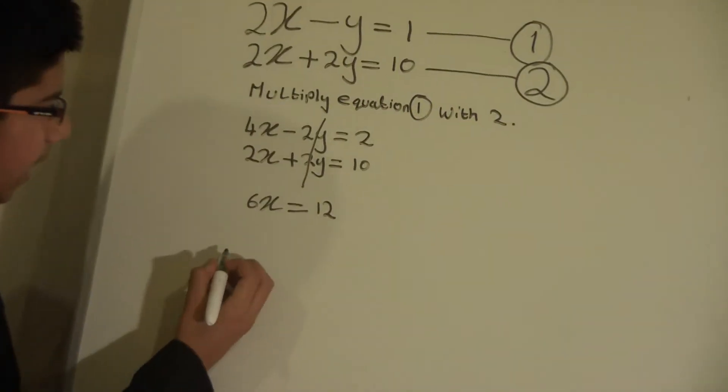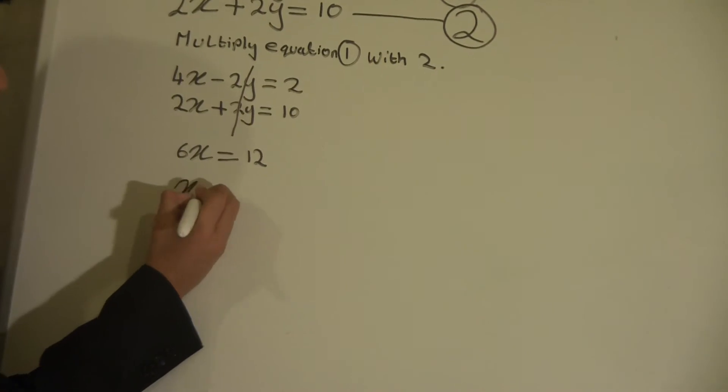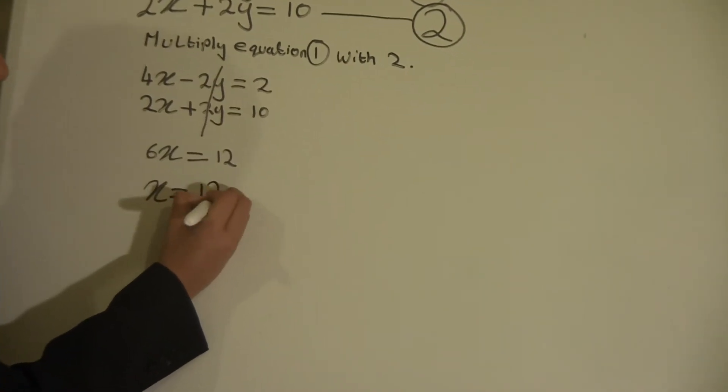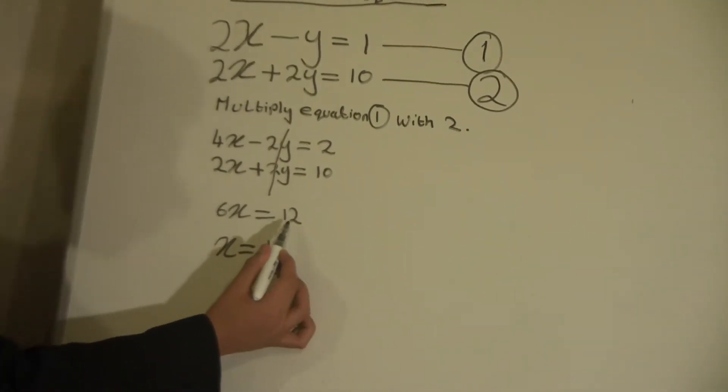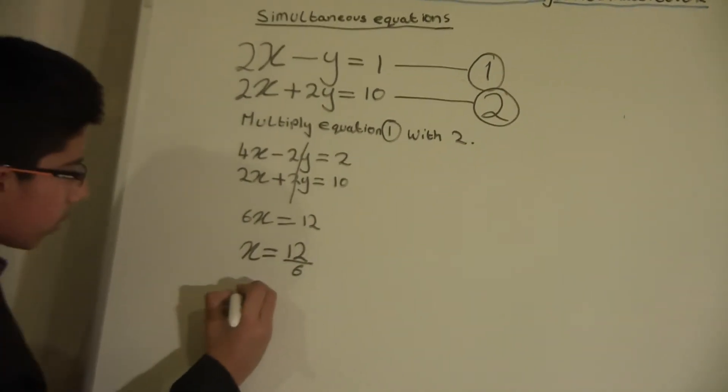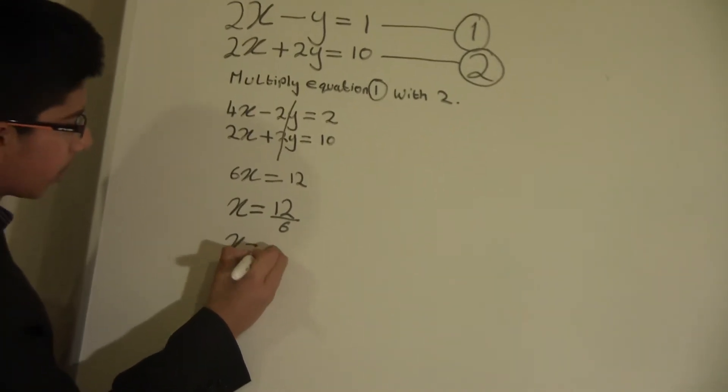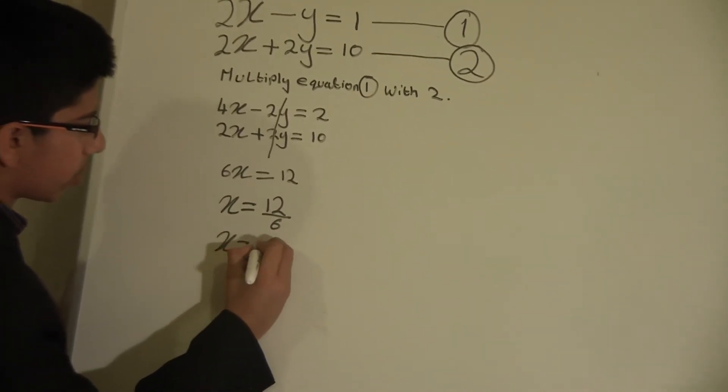And underneath that we will write x equals 12 over 6, because we want to find our x. So we will divide 12 and 6, which equals 2. So we will write x equals 2.